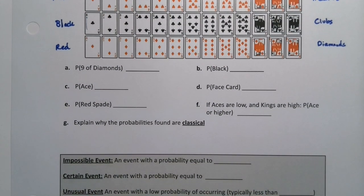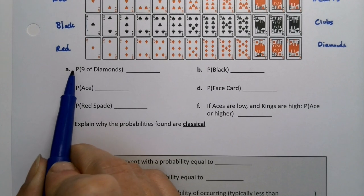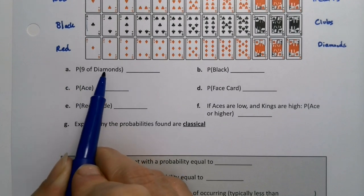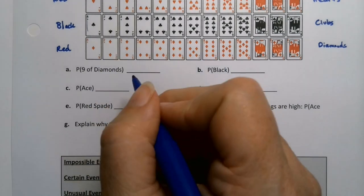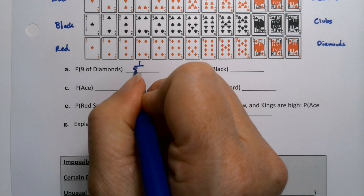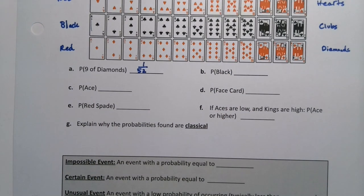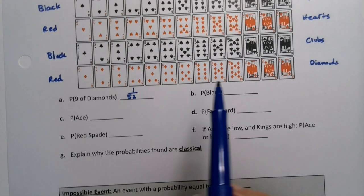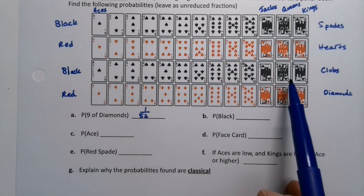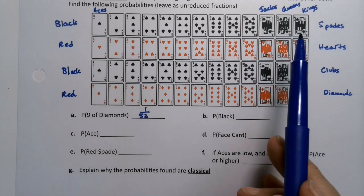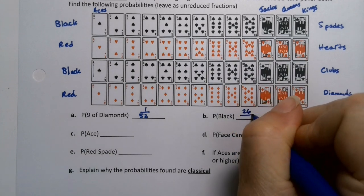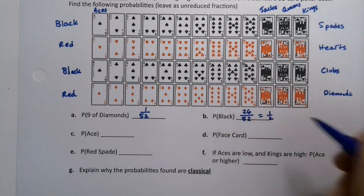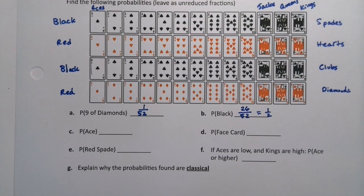Let's look. We want to find the probability — because that's what capital P stands for — probability of the nine of diamonds. The nine of diamonds is right here; it's one card out of the 52-card deck, so that would be 1 divided by 52. This is a case where fractions would be way easier than a decimal. What about black cards? These two suits are black. There are 13 cards in a suit, so it's 13 plus 13, which makes 26 cards — 26 out of 52, which is a half. Half of the cards are black.